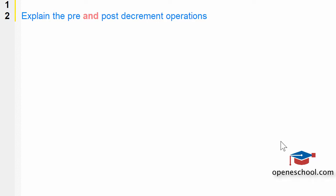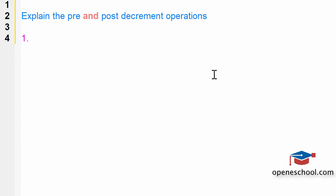In this video tutorial series we are discussing C programming interview questions. The question we are discussing in this video is: explain the pre and post decrement operations. In the previous video tutorial we discussed about the pre and post increment operations, so the explanation to this question is also the same. I will give an explanation again and show you a code example to support the theoretical explanation.